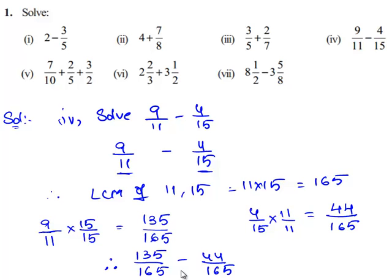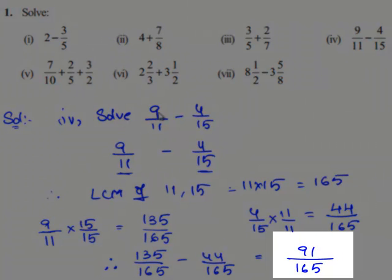Since both rational numbers have the same denominator, we can directly subtract the numerators. 135 minus 44 gives 91, and the denominator 165 remains the same. Therefore, the solution for 9/11 minus 4/15 is 91/165.